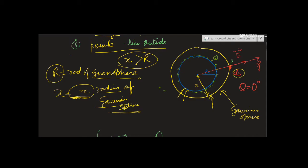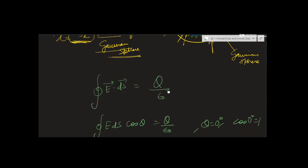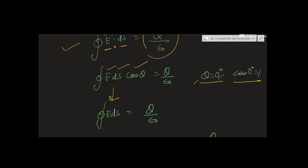From positive charge, the electric field is always outward. The normal and field are in the same direction, so the angle theta is 0 degrees. Using Gauss Law: E⃗ · ds⃗ = q/ε₀. Since cos(0°) = 1, this simplifies to E·ds = q/ε₀.